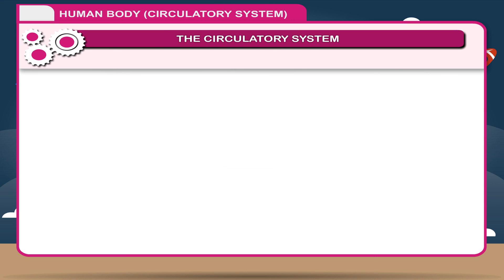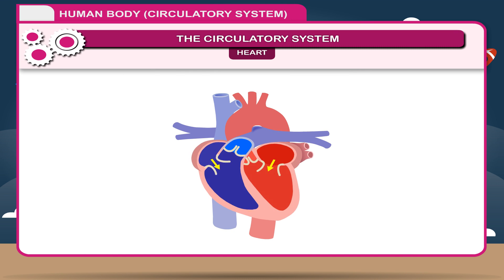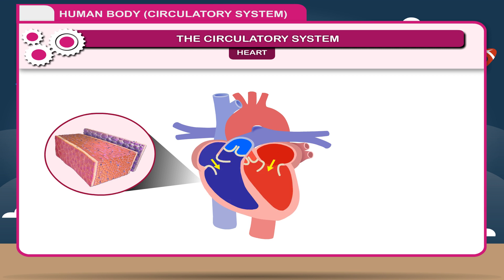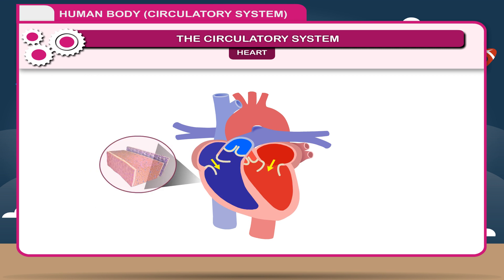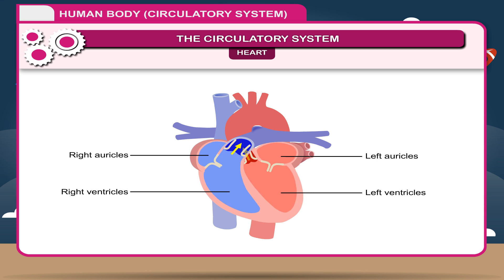The heart is a dark red conical structure located in the middle of the chest, slightly towards the left side. It is enclosed by a double-walled membranous sac called the pericardium. The heart is the engine of the circulatory system. It is divided into four chambers: the two upper chambers are called left and right auricles, and the two lower chambers are called ventricles. The walls of these chambers are made of a special muscle called myocardium, which contracts continuously and rhythmically to pump blood.